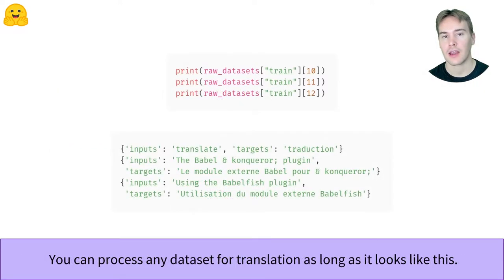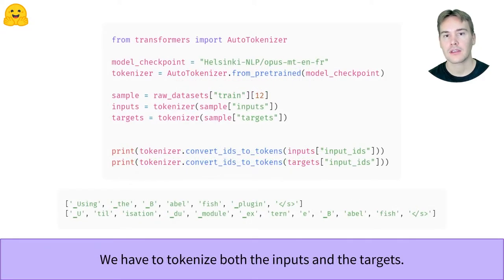As long as you manage to have your data look like this, you should be able to follow the same steps. For once, our labels are not integers corresponding to some classes but plain texts. We will thus need to tokenize them like our inputs.